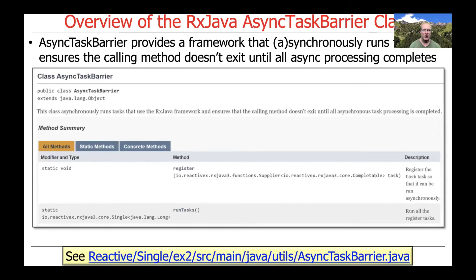To summarize, the async task barrier for RxJava provides a framework that allows asynchronous or synchronous tasks to run, ensuring the calling method doesn't exit until all async processing completes. If you work with RxJava or Project Reactor, you quickly realize that having this kind of test driver is very helpful. It turns out to be useful for other things as well, which is why it's called async task barrier rather than async test barrier — it's a genuinely useful utility class in its own right.